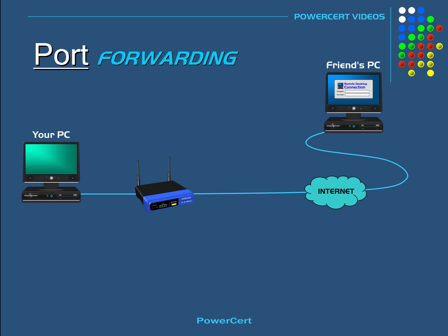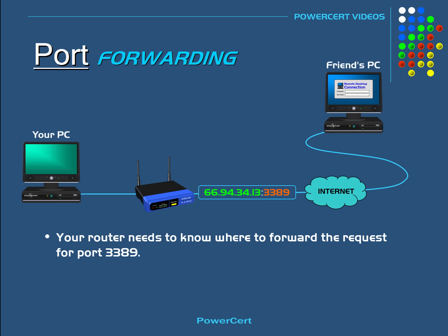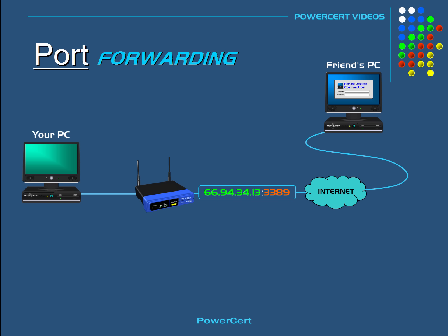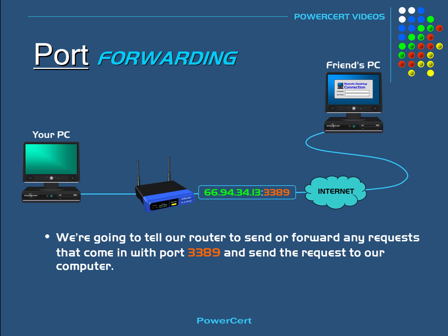The request with the port number will make its way through the internet to your router. Once it reaches your router, your router needs to know where to forward the request for port 3389. Without any port forwarding configured, your friend will not be able to connect to your computer because your router does not know what to do with this request. This is where port forwarding comes in — we're going to tell our router to forward any requests that come in with port 3389 to our computer.